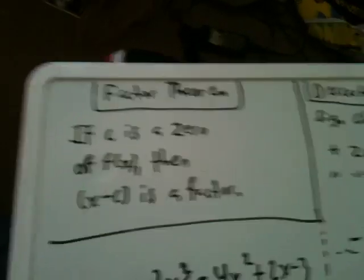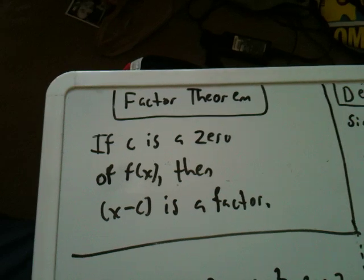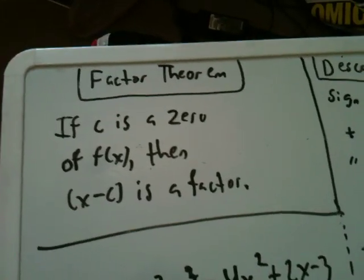Basically it just says, if c is a zero of f(x), then x minus c is a factor of f. It's that simple.